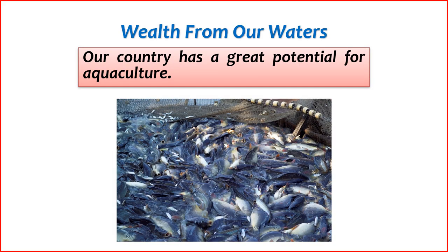Wealth from Turkey's water resources encompasses a wide range of economic opportunities and benefits derived from the country's abundant water sources. 1. Agriculture — Turkey's water resources play a crucial role in agriculture, supporting the cultivation of various crops. The fertile soil combined with efficient water management contributes significantly to agricultural output, providing income for farmers and contributing to the nation's food security. 2. Hydropower generation — the country's rivers and water infrastructure facilitate hydropower generation. Hydroelectric power plants harness the energy from flowing water, contributing to the national energy grid and reducing dependence on non-renewable energy sources.